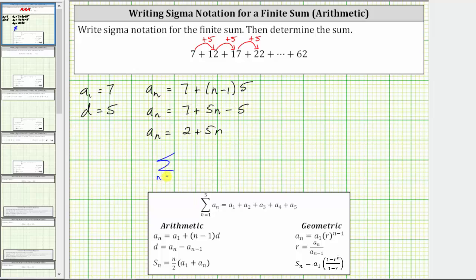n begins at the value of one. The formula that generates the terms in the series is two plus five n. And now we're left to determine the upper limit of the index, or the last value of n, which is the value of n that generates the last term, which is 62. To do this,